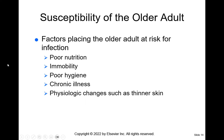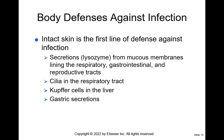How does the human body defend itself against infection? Intact skin is the first line of defense. Mucous membranes secrete lysozymes — even tears and saliva are antibacterial. Cilia in the respiratory tract sweep mucus and pathogens away from the lungs. Kupffer cells in the liver and gastric secretions also help. The stomach's pH of one to four is important for killing bad bacteria that may enter with food.